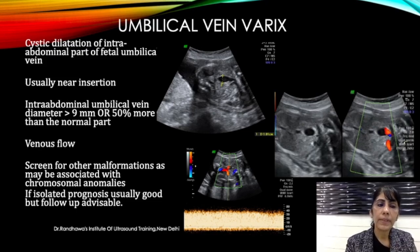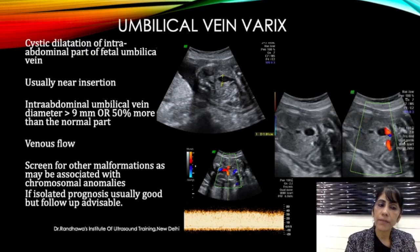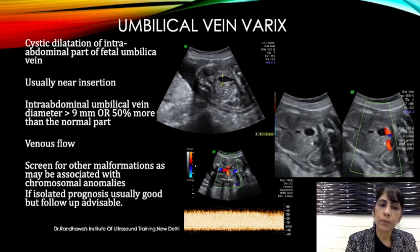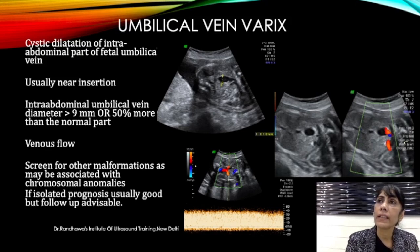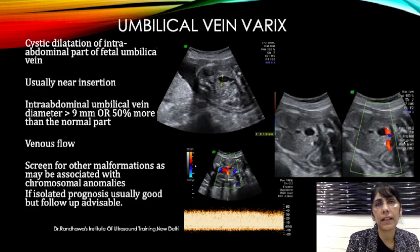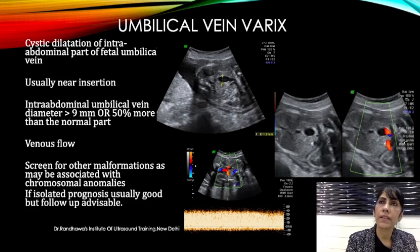The next question is: what is the significance if you see umbilical vein varix? Always screen such patients for other abnormalities, because it has been found to be associated with chromosomal anomalies and particularly cardiac anomalies. In isolated cases — like this case where no other abnormality was found — the prognosis is good, but you should do a follow-up. In very rare cases, congestive heart failure may develop later, but most isolated cases result in a normal delivery.